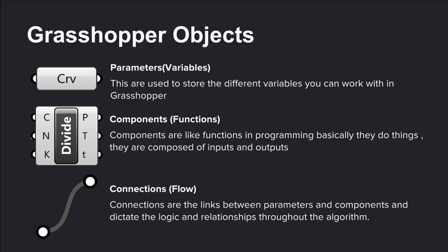Basically, Grasshopper is made out of three things. If you manage to keep this in mind, you'll come to realize that Grasshopper is actually a very simple software to understand. These are the three main types of components we have in Grasshopper. The first one would be the parameters, which you could think of as the variables in a programming language. These are used to store the different types of variables you can work with in Grasshopper.